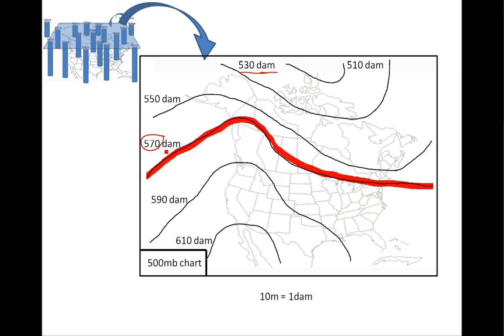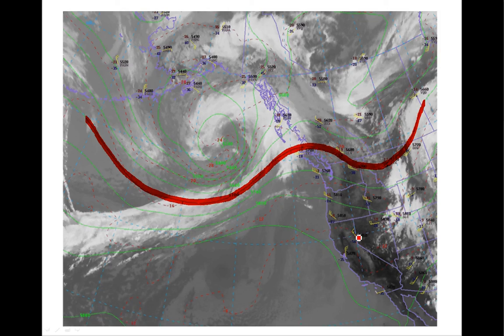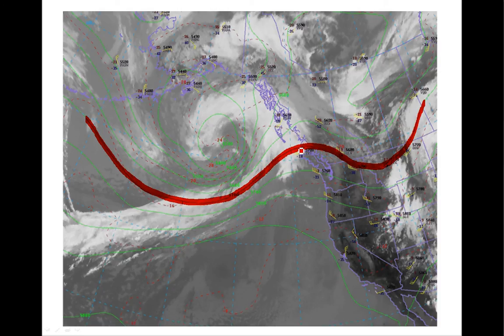Areas south of the 570 line will usually see higher 500 millibar heights, and areas to the north will see lower heights — those shorter columns of air across northern Canada versus the taller columns to the south. There are often relationships between surface weather and where the 570 line happens to be, though 570 is just one height contour chosen somewhat arbitrarily. More often than not, you can draw connections between the weather at the surface and where that 570 line is located.